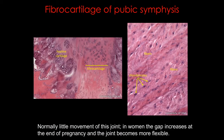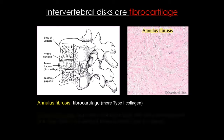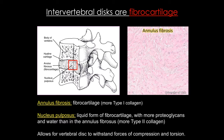In these two images of the pubic symphysis, particularly in the image on the right, you can really see the large collagen fibers giving it that ropey appearance, and the scattered chondrocytes. Here I'm showing an intervertebral disc, which also consists of fibrocartilage. The outer annulus fibrosus consists of fibrocartilage with ropey fibers and chondrocytes, while the inner portion, called the nucleus pulposus, is a much more liquid form — less like fibrocartilage, more like hyaline cartilage, with more extracellular matrix and more type 2 collagen. Together these allow the vertebral disc to withstand major forces of compression and torsion.